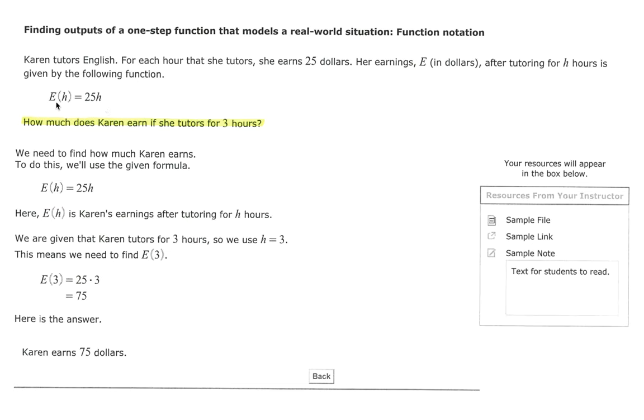Where again, E represents the earnings, in this case per hour, and we do that by taking 25 times the number of hours.